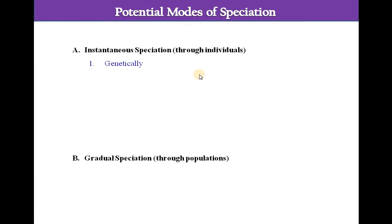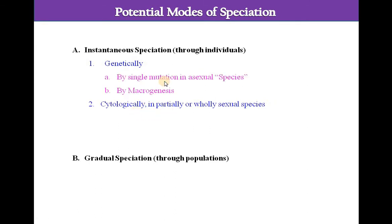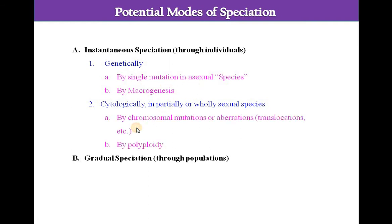Instantaneous speciation can occur genetically or cytologically. Genetically, it can occur by single mutation or by macrogenesis, and cytologically by chromosomal mutations or by polyploidy.